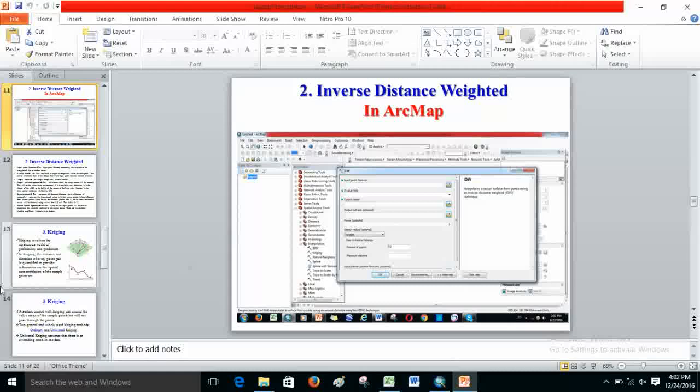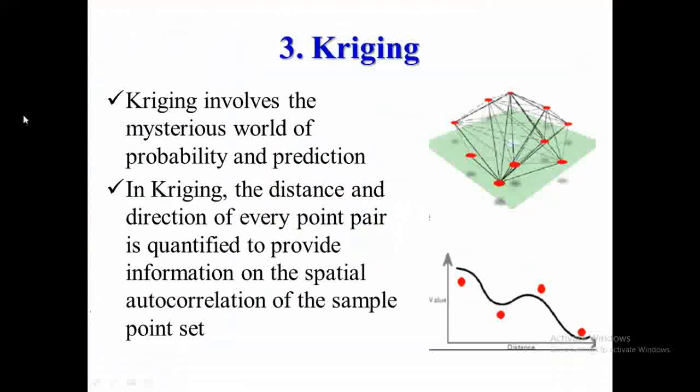The next method I will introduce is Kriging, which is one technique for interpolation that we mostly use. Kriging has different parameters and increases the distance and direction of every point pair to provide information on spatial autocorrelation of sample points. Unlike IDW, it uses spatial autocorrelation between points — points having strong correlation will take higher magnitude.